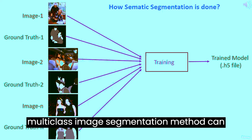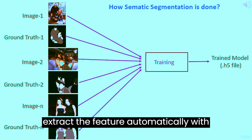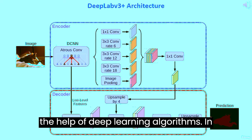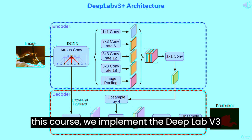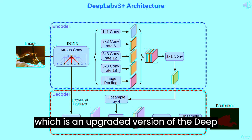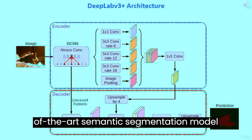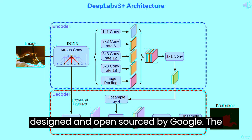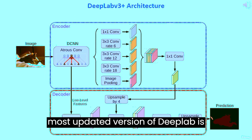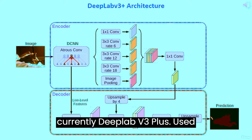The deep learning-based multi-class image segmentation method can extract features automatically with the help of deep learning algorithms. In this course, we implement DeepLab V3, which is an upgraded version of the DeepLab model. DeepLab is a real-time state-of-the-art semantic segmentation model designed and open-sourced by Google. The most updated version used in this course is DeepLab V3 Plus.